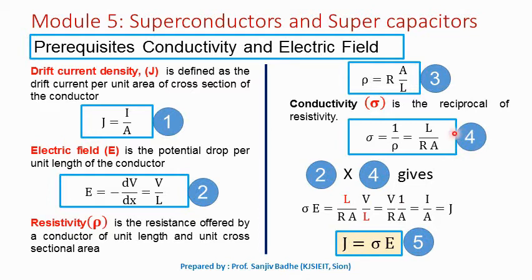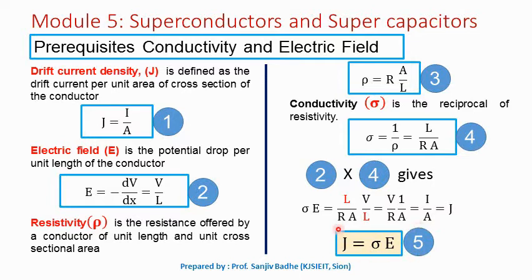If we take the product of the electric field equation and the conductivity equation, we get conductivity times electric field equal to (L upon Ra) times (V upon L). The L cancels, giving V upon R times 1 upon A. Since V upon R equals I (the drift current), we get conductivity times E equals I upon A. From equation 1, I upon A is drift current density J. So drift current density J equals conductivity times electric field — an important relation we will use in further discussion.